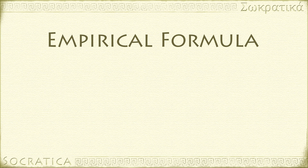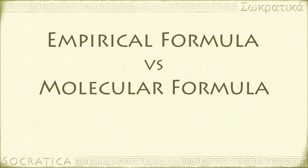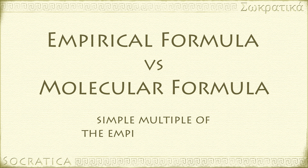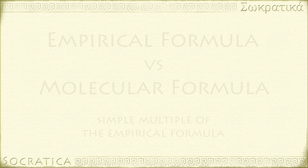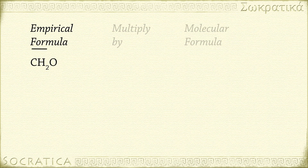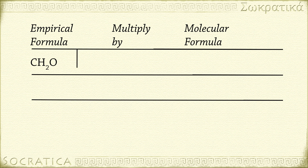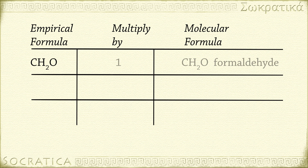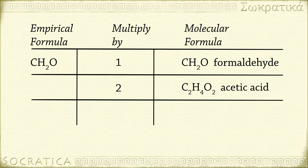An empirical formula may or may not be the same as the molecular formula. The molecular formula is always a simple multiple of the empirical formula. For example, CH₂O is both the empirical and molecular formula for formaldehyde. Multiplying by 2 gives C₂H₄O₂, the molecular formula for acetic acid. Multiplying by 6 gives C₆H₁₂O₆, which is glucose. We'll talk more about finding molecular formulas in another video.